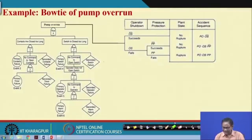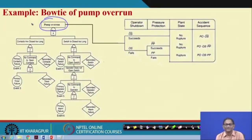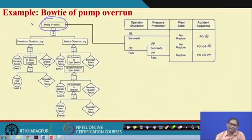Here we are returning to the pressure tank system example. The top event has intentionally been set as pump over-run, because we think that tank rupture is the accident state. It is better to work on pump over-run, because if pump over-run can be minimized or eliminated, that over-pressure condition can be eliminated and tank rupture will not happen due to that deviation.